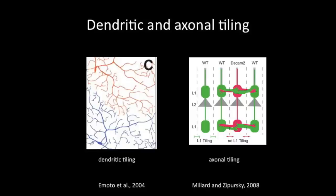Dendritic tiling was originally reported for different classes of ganglion cells in the mammalian retina. Dendrites of the multi-dendritic MD sensory neurons in Drosophila larvae also follow the rules of dendritic tiling, as illustrated by the graph on the left, in which dendritic arbors from two adjacent neurons come into close contact with each other but do not cross each other. It is thought that this type of tiling is mediated by homotypic repulsive molecules on the plasma membranes of these dendrites.